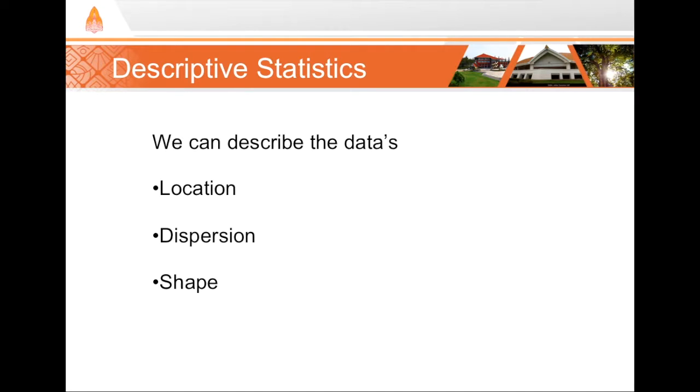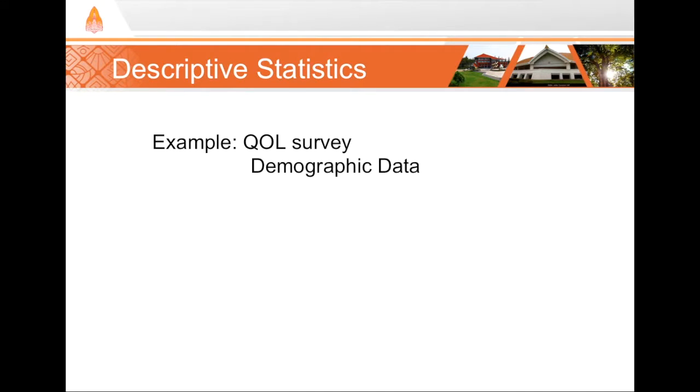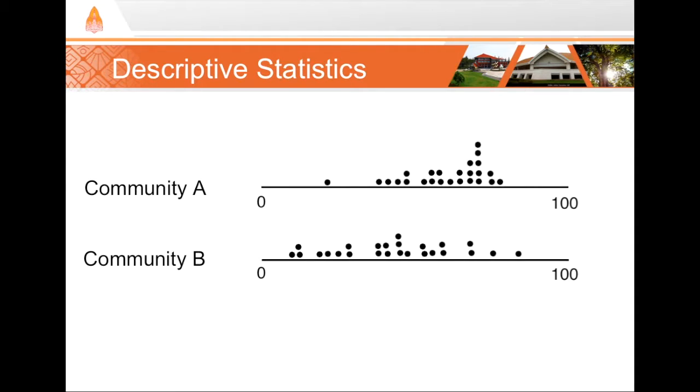Let's say, for example, I'm conducting a survey to compare quality of life between two different communities using a questionnaire. On my questionnaire, I collect some basic demographic data, including age. I use an open-ended question format, which results in continuous data. Imagine that I surveyed 25 participants in each of the two communities. Here's a visualization of those ages. The scale is age in years from 0 to 100. Each dot represents one participant.